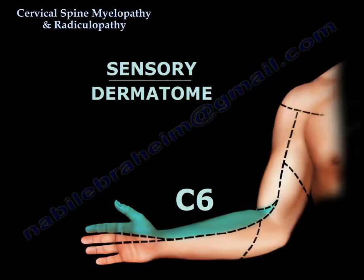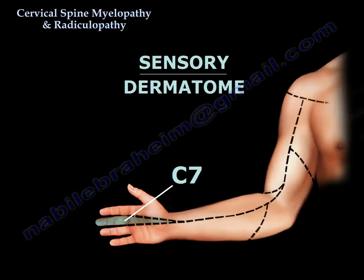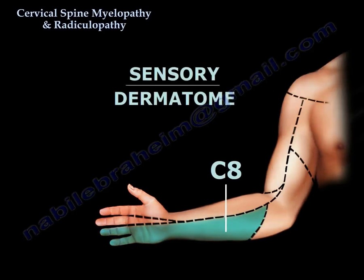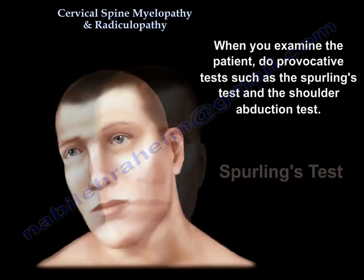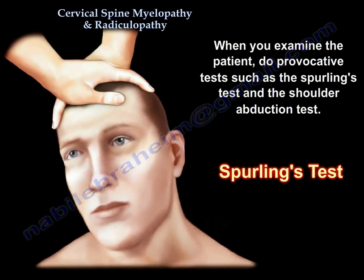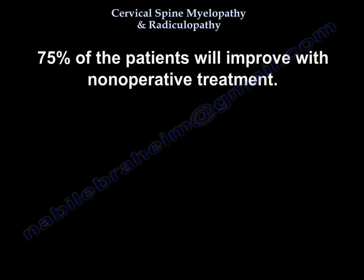The dermatomes: C6 corresponds to the index finger (the shape of 6), C7 is the middle finger, and C8 is the fifth finger. The patient will come with unilateral arm pain relieved by arm elevation, and numbness and paresthesia in specific dermatomes. Perform provocative tests such as Spurling's and the shoulder abduction test. Even with a bad cervical spine MRI, treat conservatively for about 3 months with therapy and NSAIDs. 75% of patients will improve with non-operative treatment.